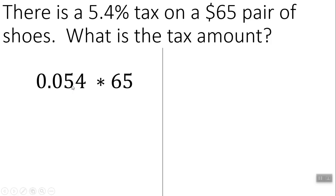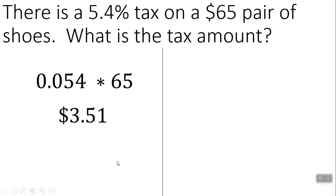There is a 5.4% tax on a $65 pair of shoes. What is the tax amount? Using a calculator, you'd slide your percentage two places over and get 0.054 times 65. This is where a lot of kids will mess up — they'll just say 0.54, and that would be a 54% tax, which would be a crazy amount of tax. When you do 0.054 times 65, you get $3.51.